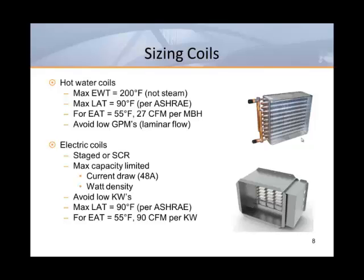This means that we should have at least 27 CFM per MBH to limit our discharge temperature. In hot water coils, it's important to avoid low water flow. If water moves too slowly through a coil, it can go from a desired turbulent flow to a less efficient laminar flow. It's much better to move water more quickly through a single row coil than to move it too slowly through a multi-row coil.